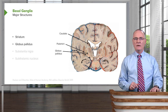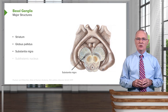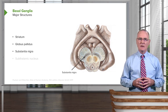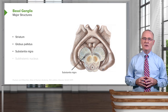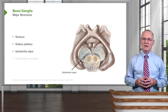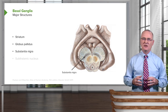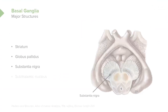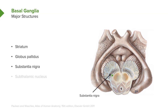I will now take you to another image to show yet another member of the basal ganglia. This is the substantia nigra — the black substance that resides in the midbrain. You can see the substantia nigra right in through here, as well as on the opposite side.